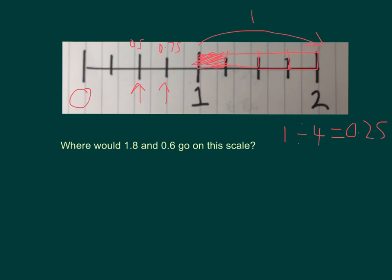So 0.6 would come slightly before halfway, so this part here would be 0.6. For 1.8, I can do the same thing. Starting from 1 and going up in 0.25s: this is going to be 1.25, this would be 1.5, 1.75, and 2. So 1.8 is going to go just after 1.75, somewhere around here.